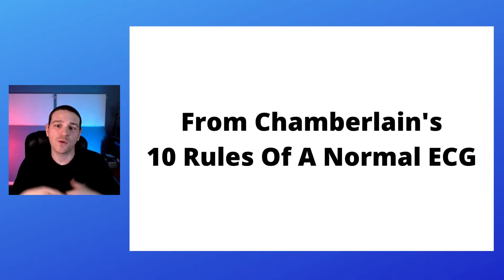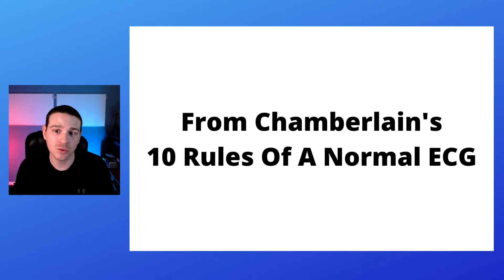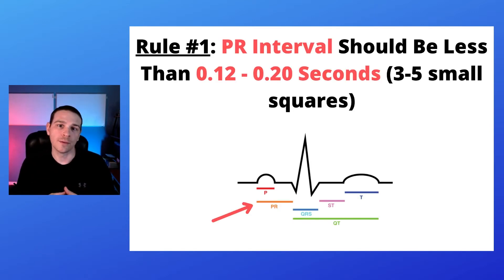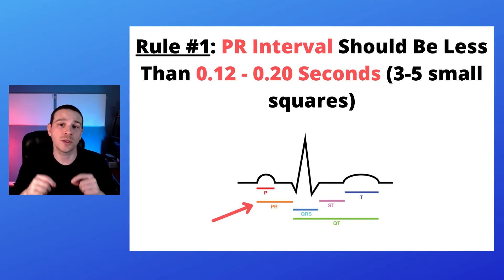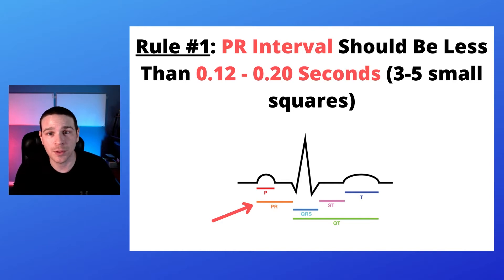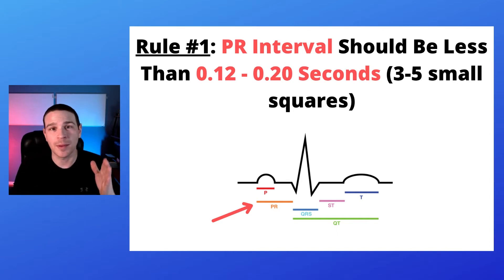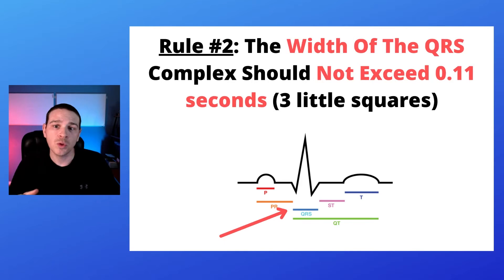These points come from Chamberlain's 10 Rules of a Normal ECG. Rule number one: the PR interval should be less than 0.12 to 0.20 seconds. As you can see in the image below, the PR interval is from the beginning of the P wave to the beginning of the R wave.